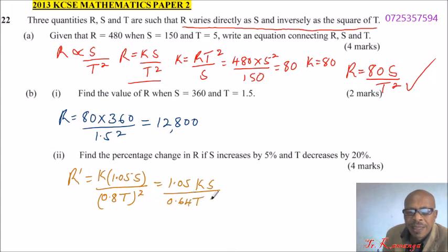You divide 1.05 by 0.64, you'll get 1.64 to 2 decimal places, of K times S divided by T squared.